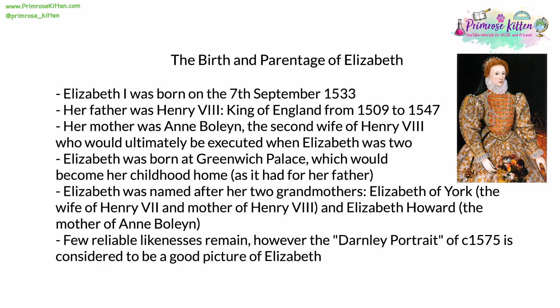Elizabeth was born on the 7th of September 1533, towards the end of the reign of Henry VIII, who was King of England from 1509 to 1547. Although his reign was shorter than his daughter Elizabeth's, it was nevertheless important and had a huge impact on both the country as a whole and Elizabeth in particular. Elizabeth's mother was Anne Boleyn, the second wife of Henry VIII. Ultimately, Anne Boleyn would be executed at the behest of Henry VIII when Elizabeth was just two — only a toddler.